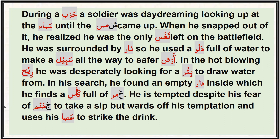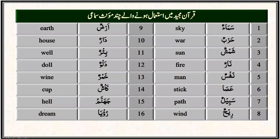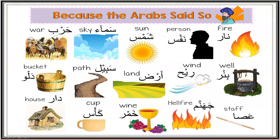These are the words from the story which you can memorize as feminine. The list of words used in the Quran as feminine includes: sama', harbun, shamsun, narun, nafsun, 'asa, sabir, ra'y, ardun, darun, bihrun, dalun, kha'bun, ka'sun, jahannam, and ru'ya. An illustrative picture will also be shared to make it easier to memorize these feminine words from the Quran.